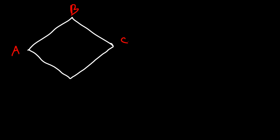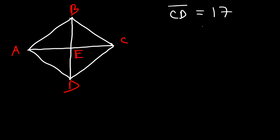Here's another problem. Given rhombus ABCD with diagonals intersecting at point E, we're told that CD is 17 units long and AE is equal to 8. We need to calculate the area of the rhombus. Since all four sides of a rhombus are congruent, AB is also 17.